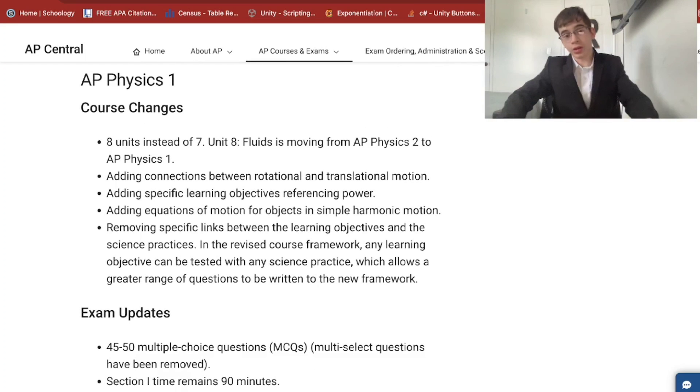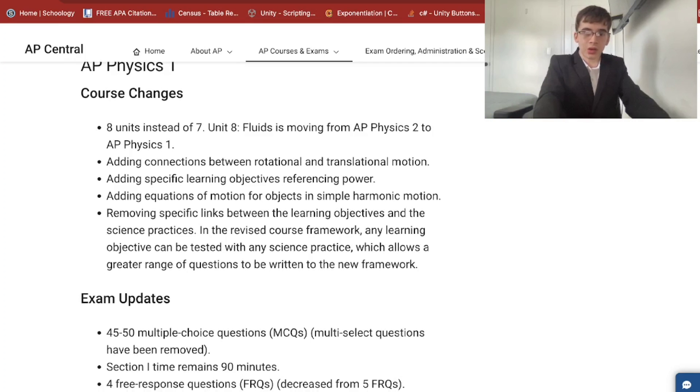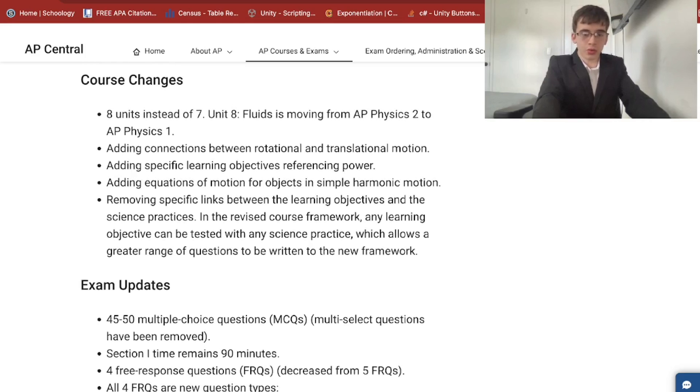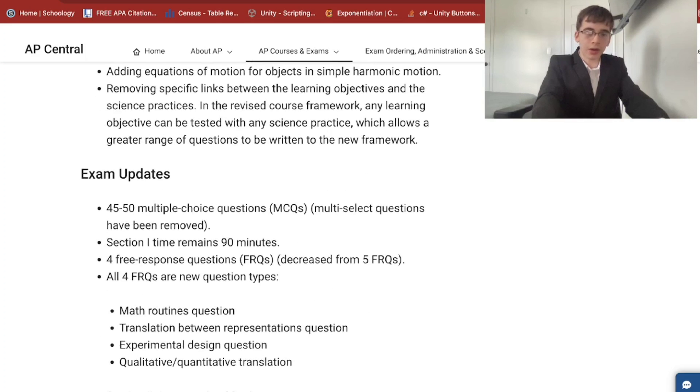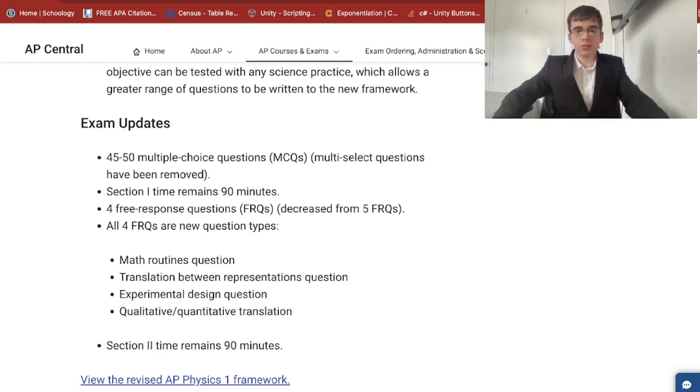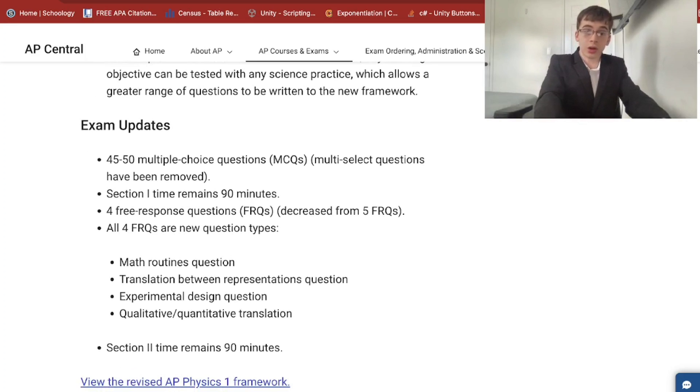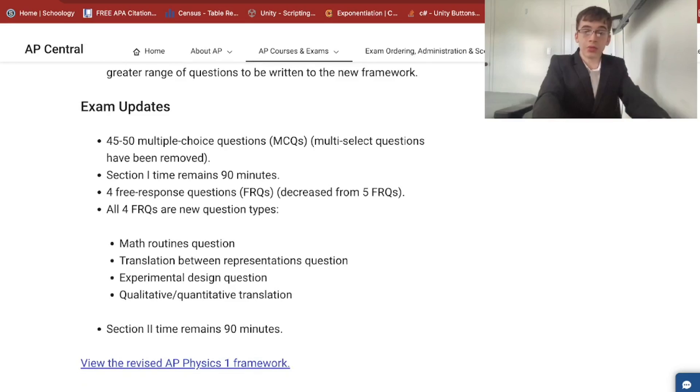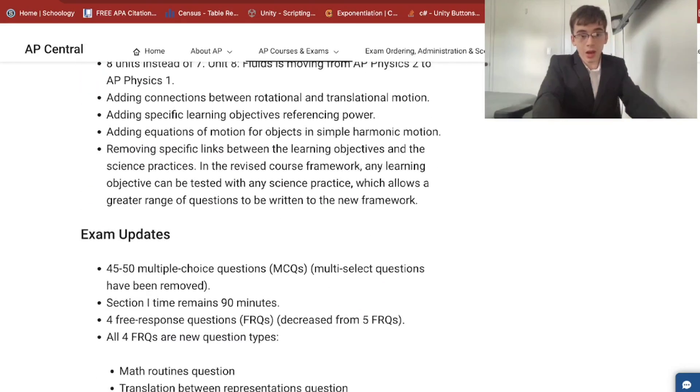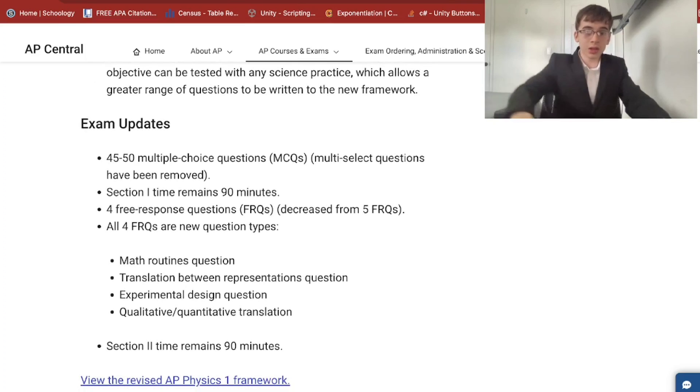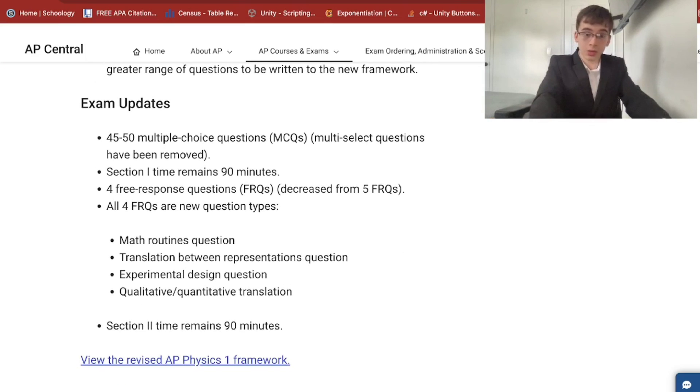For AP Physics 1, the huge one is that there will be eight units instead of seven, because the AP Physics 2 unit one, which is fluids, will be moved to AP Physics 1, and it will become the eighth unit of that course. There's some clarification and connections in the course and exam description. However, the exam updates: the only thing changed for the MCQ is that multi-select questions are gone. Section one time remains 90 minutes. There are four FRQs instead of five, so they decreased by one.